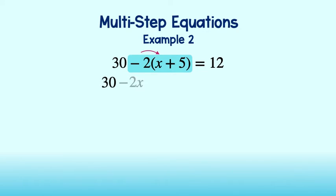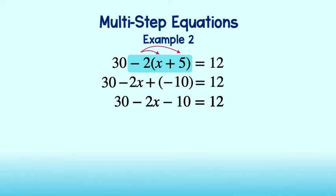Negative 2 times x is negative 2x. Bring down that plus sign. Negative 2 times 5 is equal to negative 10. Don't forget to bring down the equals 12. Our new equation is 30 minus 2x plus a negative 10 is equal to 12. Or 30 minus 2x minus 10 is equal to 12. Adding a negative is the same as subtracting, so we can simply just subtract 10.